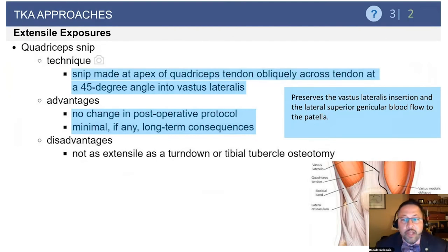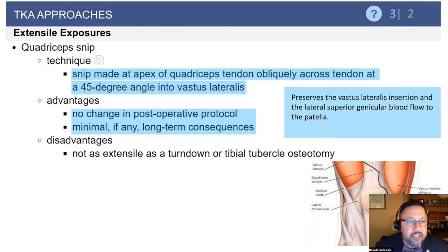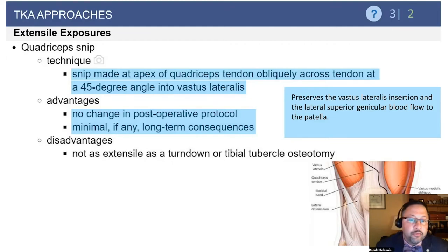The quadriceps snip begins at the apex of the parapatellar approach at the quad tendon and extends 45 degrees angled toward the vastus lateralis. With the quadriceps snip you can facilitate lateralization of the patella, and there is really no change in the post-operative protocol as it pertains to physical therapy and rehabilitation.